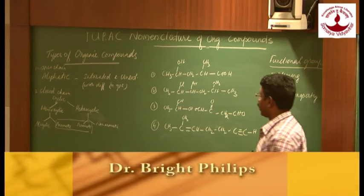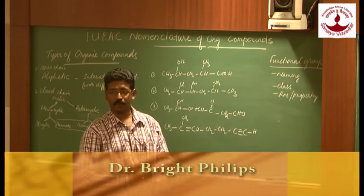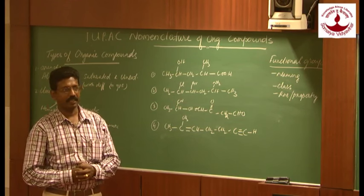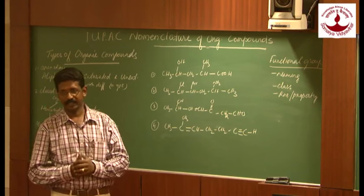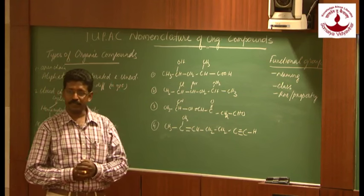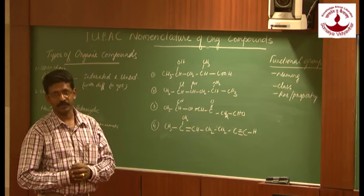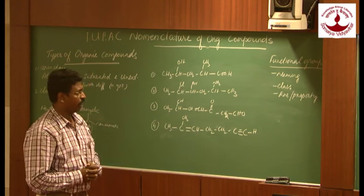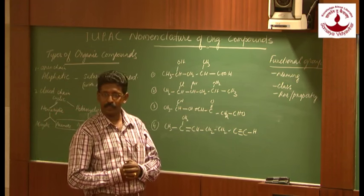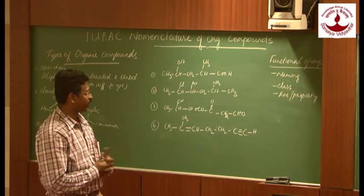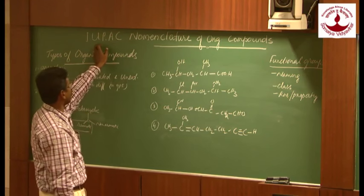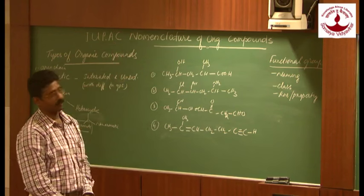Organic compounds are compounds of carbon. There are a large number of compounds because carbon has a special property called catenation. Millions of compounds exist. Earlier, organic compounds were named by their trivial name — that is, the source from where they are obtained. As the number of compounds increased, it became very difficult, and therefore in 1892 in Geneva a particular meeting was called and a new type of nomenclature was introduced: IUPAC nomenclature of organic compounds.